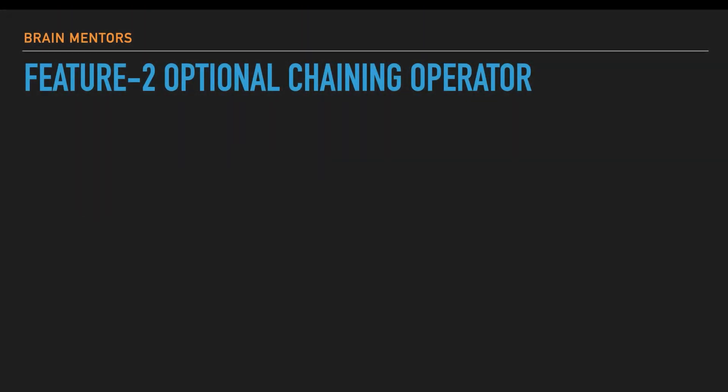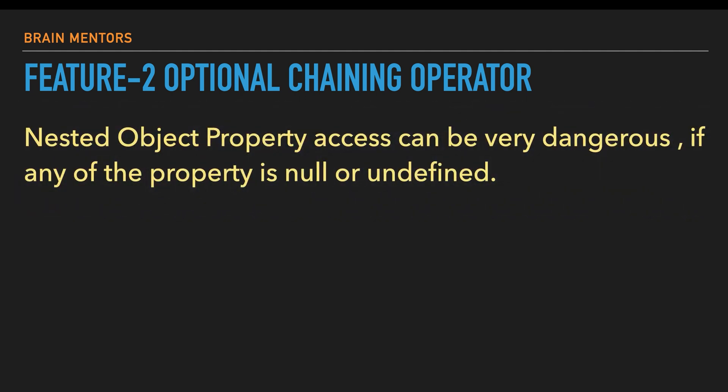Moving to feature number two: the optional chaining operator. When you have a nested object property that might be null or undefined, it is dangerous to access it — it generates a TypeError saying your property is undefined. The optional chaining operator is how we handle these errors.